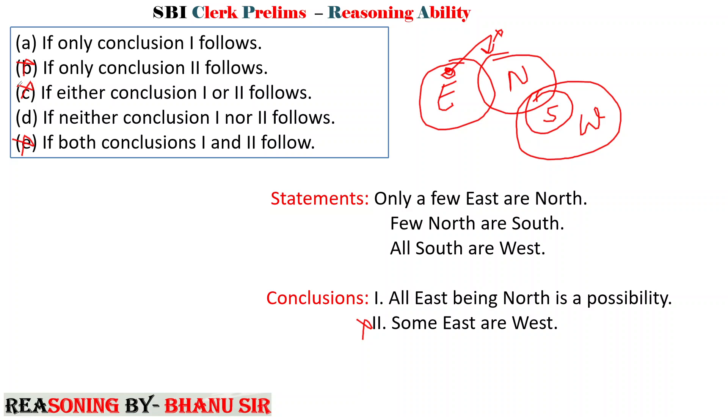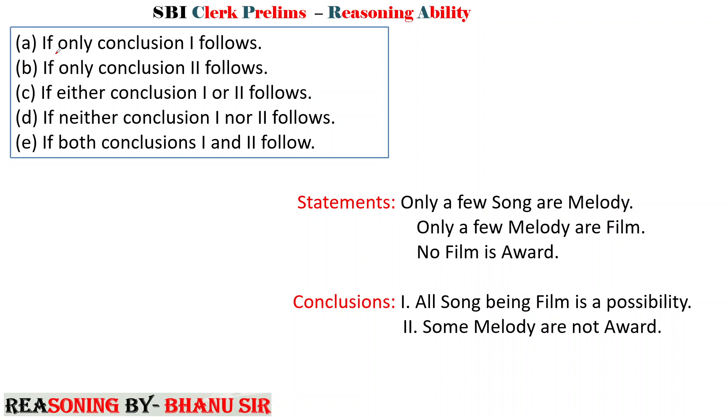If you don't have a mistake in the bank exam, you don't have a mistake. But now you have a doubtful condition with only two options. Now, all the East being North is a possible. Some North. That's why your right answer is option number D: neither first nor second is follow.